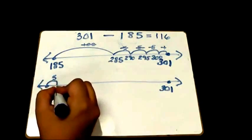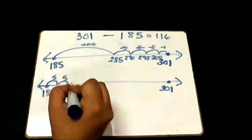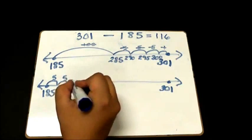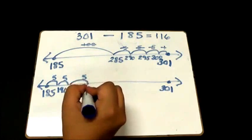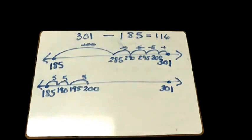They might say a jump of 5 gets me to 190, a jump of 5, 195, a jump of 5, 200. Once they get here,